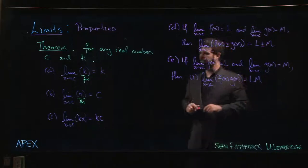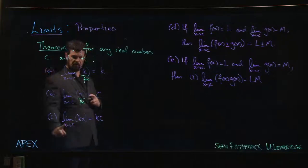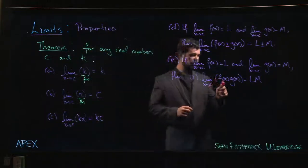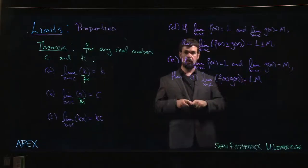This rule is often used in conjunction with this first rule here and it's sort of a variation on part c. If you have the limit of a constant times a function, the result is going to be that constant times the limit of the function.